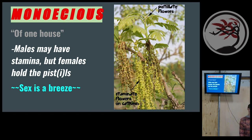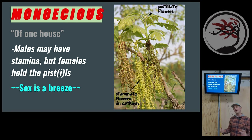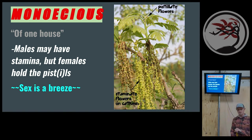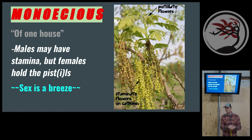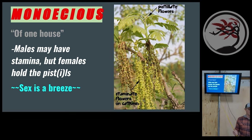Here's an easy mnemonic: males may have stamina, but females hold the pistols. The flowers are catkins — a flower type also found on birch. For oaks, the male pollen-bearing flowers are long and pendulous, and the female flowers are very short and hard to see. All trees with catkins are wind pollinated — so for oaks, sex is a breeze.